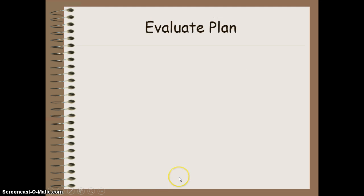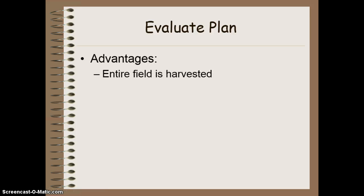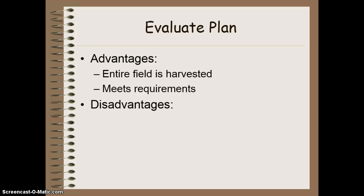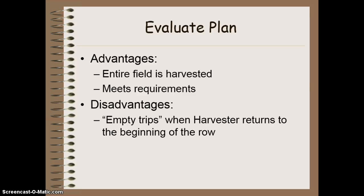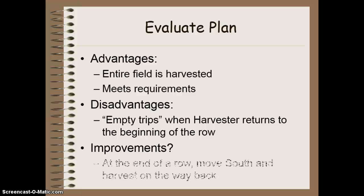If we look at this and evaluate how well it's going to work: one advantage is that it does everything we require and fully harvests the field. However, a disadvantage is that the harvester is going to make some empty trips back to the beginning of the row. So we need to improve this particular strategy and come up with a better option.